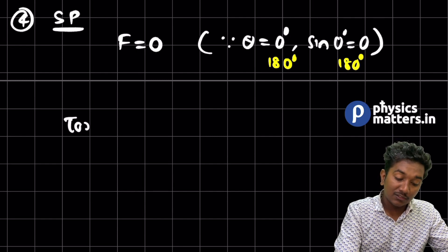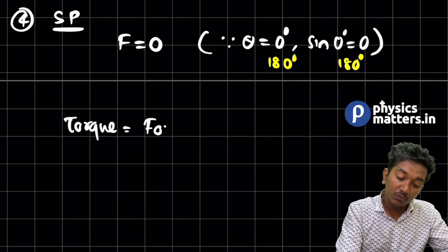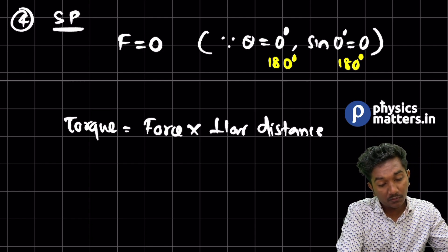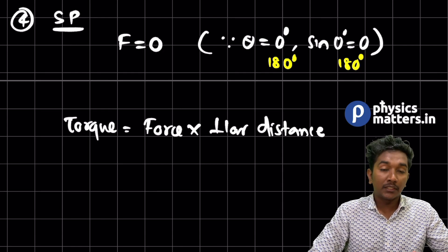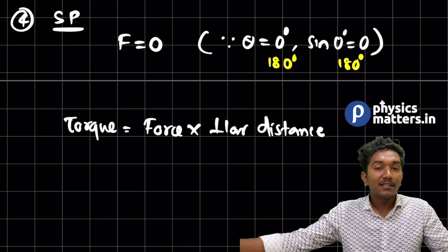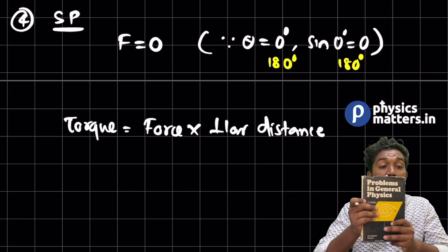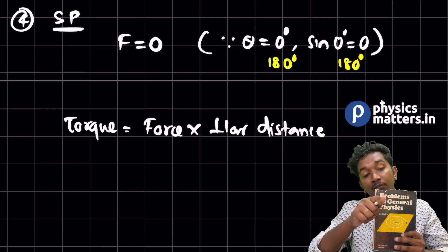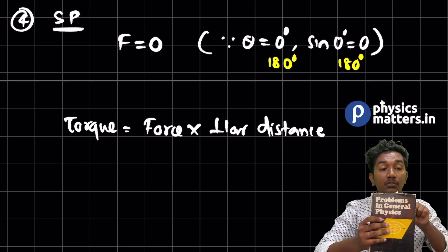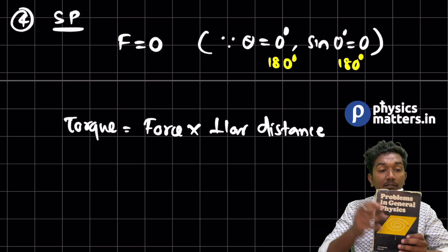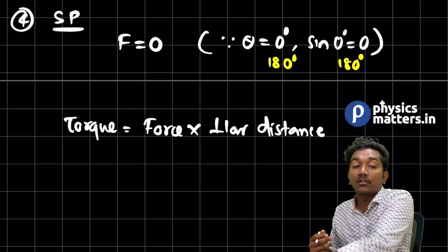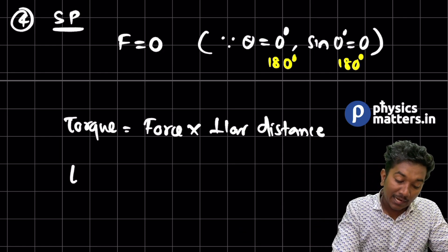Torque is equal to force into perpendicular distance. Both torques are in the same direction: one force causes clockwise rotation and the other force also contributes in the same rotational direction. So we can add both torques together.